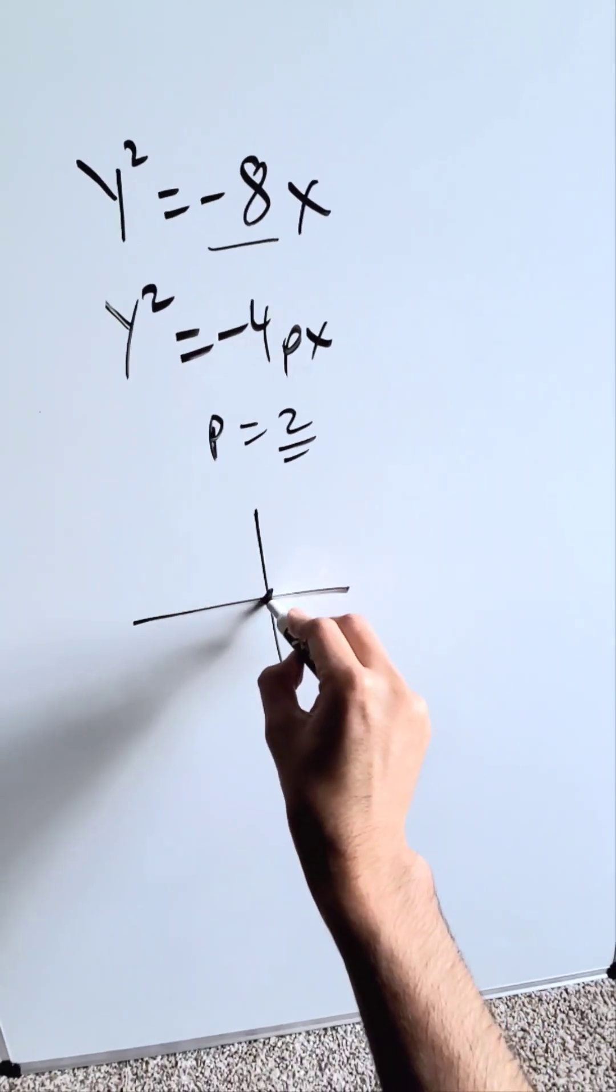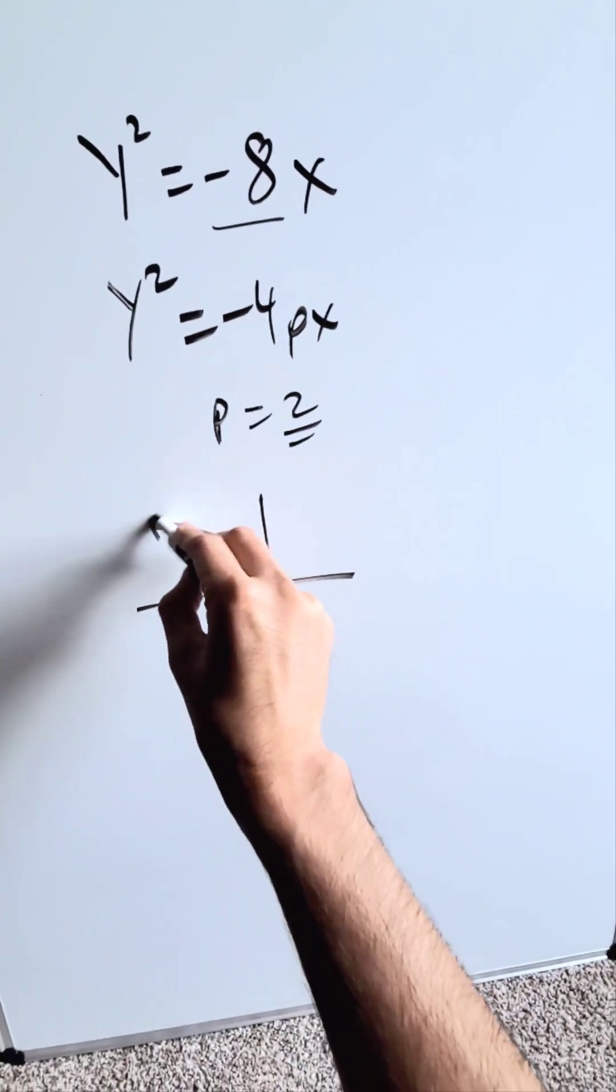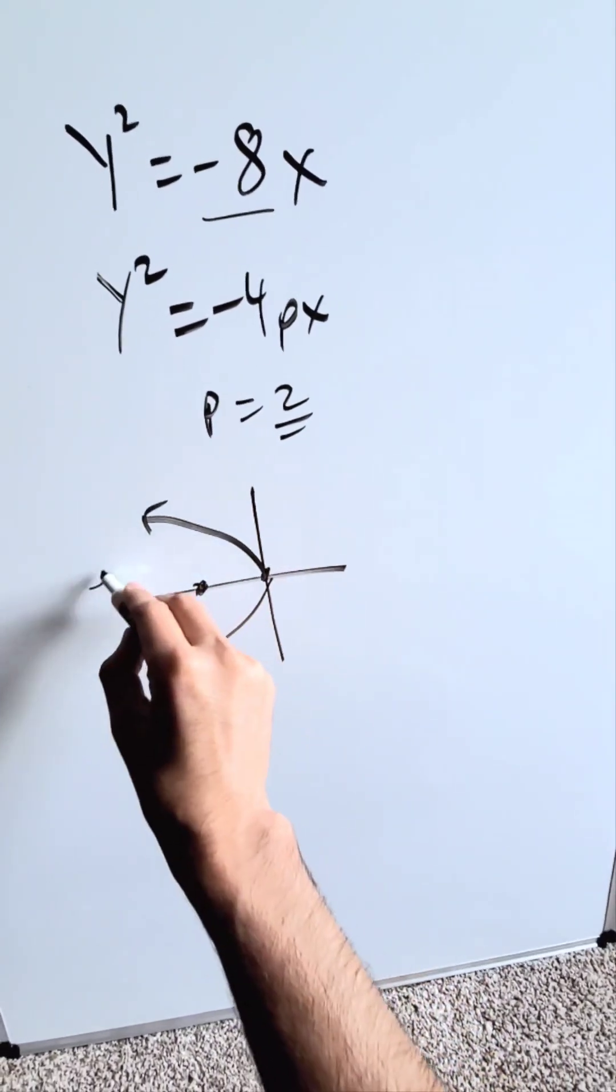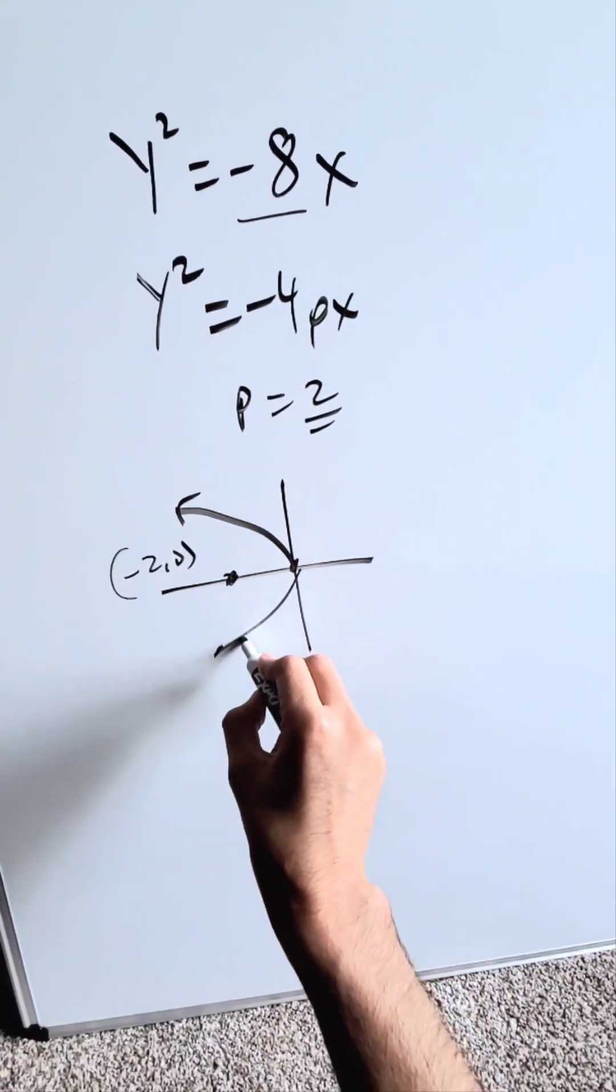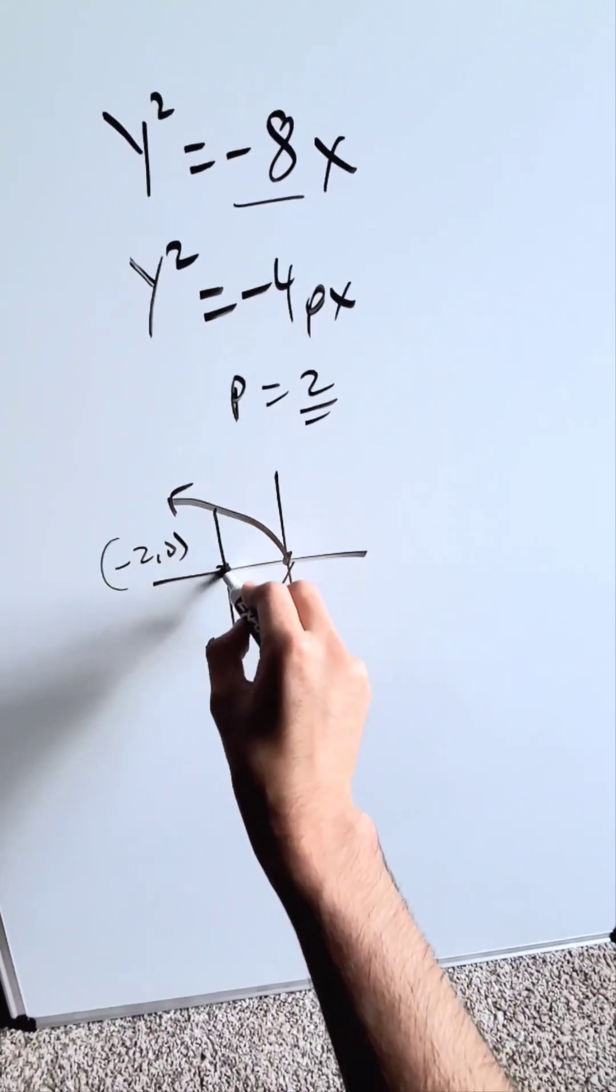We have a parabola which is pointing towards the left, vertex at the origin. The focal point is 2 units away and it'll be right here minus 2 comma 0. The latus rectum is a segment which goes from one side of the curve to the other but always through that focal point.